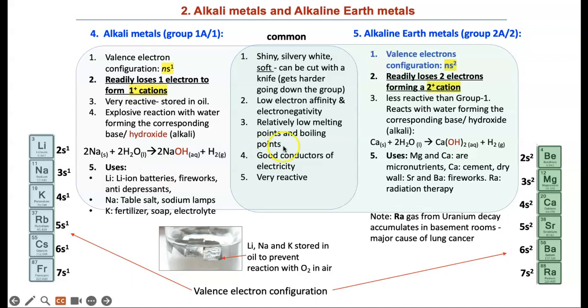Let's look at alkaline earth metals. Valence electron configuration is NS2. They readily lose 2 electrons forming plus 2 cations. They are less reactive than group 1. They react with water, just like group 1, forming the corresponding base hydroxide or alkali. The chemical reaction is very much the same, but these are slightly less reactive than group 1A elements.